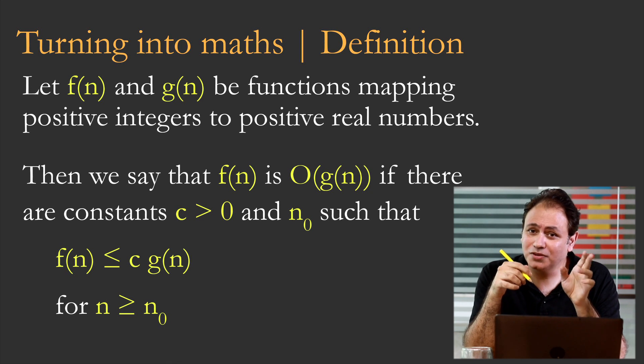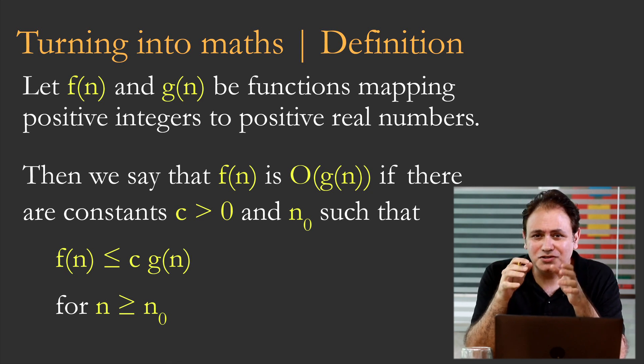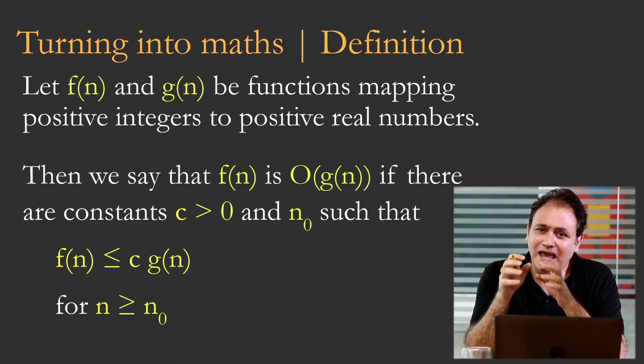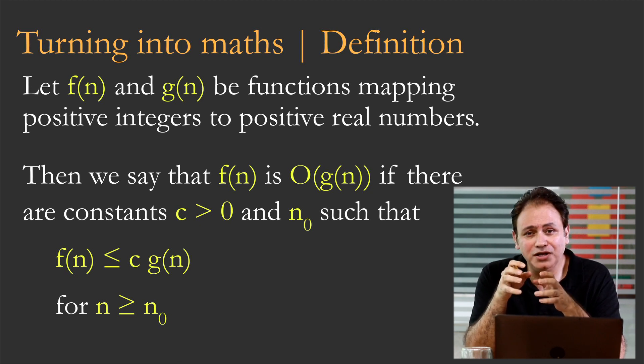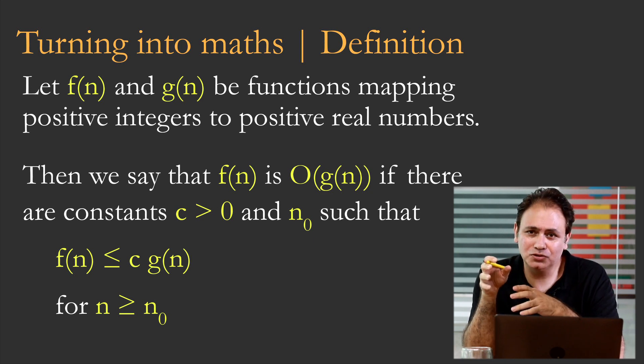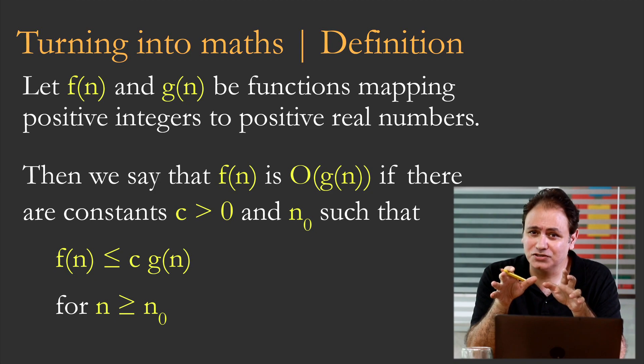We saw the n₀. So there are constants c greater than zero and n₀ such that f(n) is less than or equal to c times g(n) for all n greater than or equal to n₀. And we saw that in the visualization.